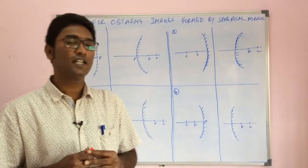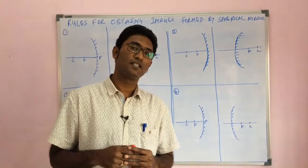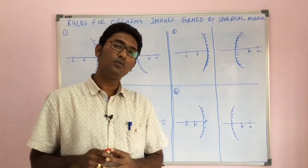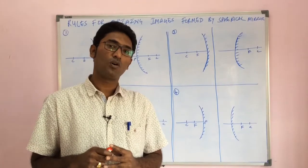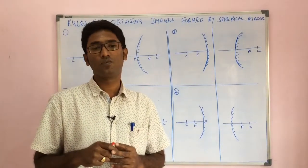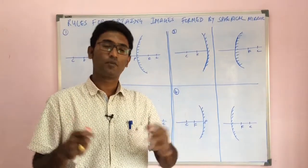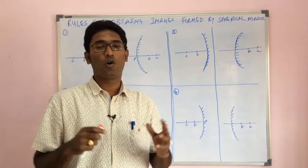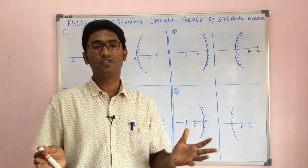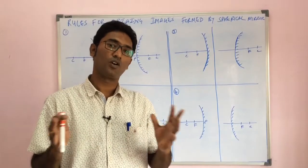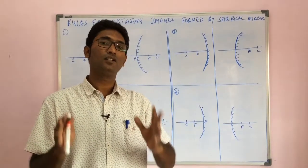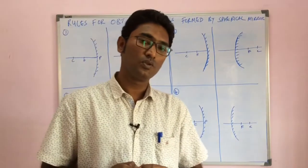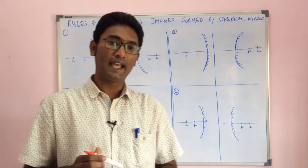All these different types of images can be represented with a ray diagram on paper. To draw ray diagrams and determine the properties of images formed when an object is placed at different positions in front of a concave or convex mirror, there are certain rules. Let us see these four rules used for constructing the ray diagram.